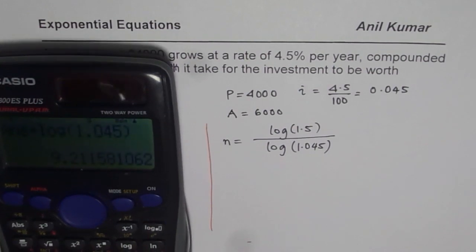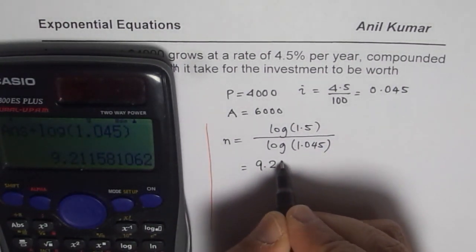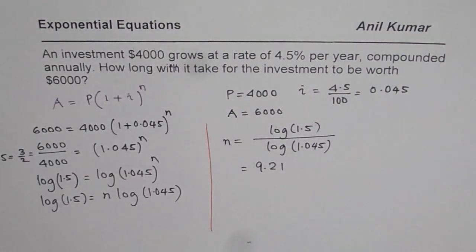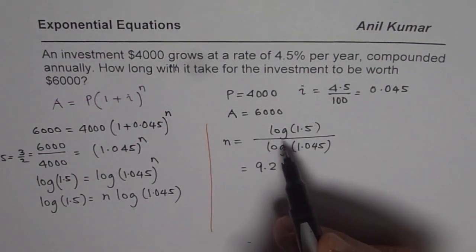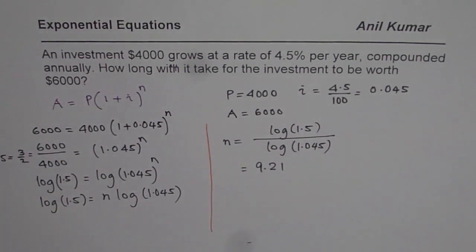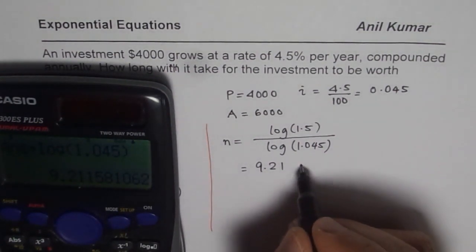Equals - we get about 9 years, 9.21. So in about 9.21 years the investment will be $6000. At times you may be required to convert this to years and months. So this is in years.